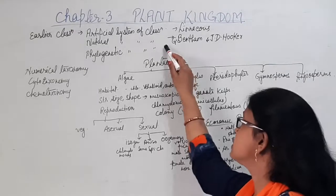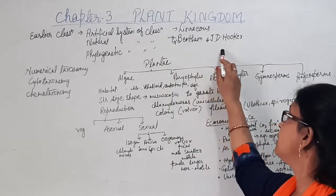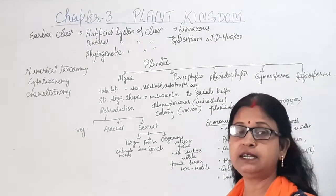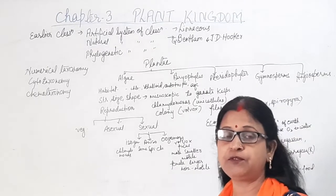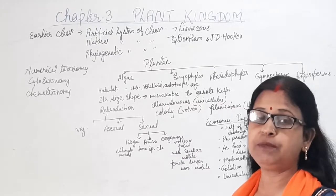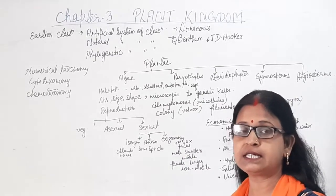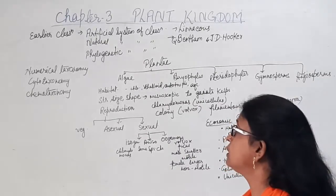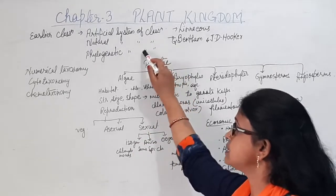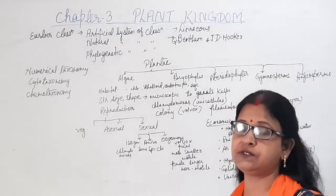Then came the natural system of classification, given by George Bentham and Joseph Hooker. They considered morphology along with anatomy, embryology, and all internal structures for classification. That's why it was known as the natural system of classification.